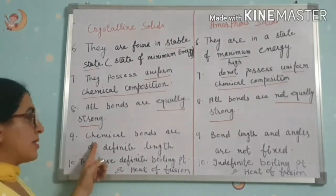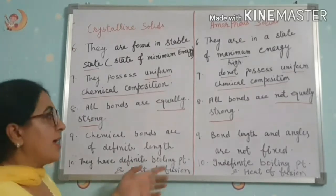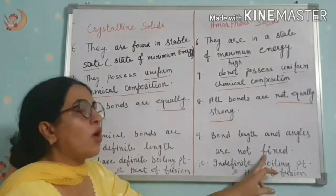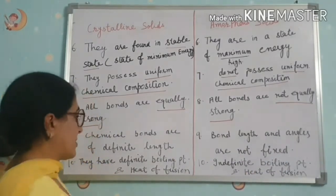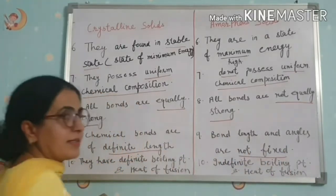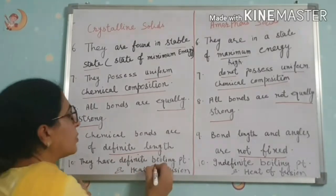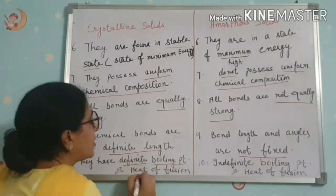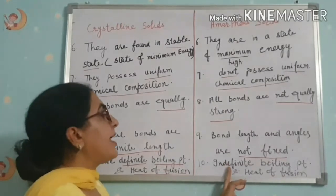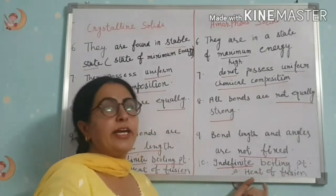The ninth point: in crystalline solids, chemical bonds are of definite length, while in amorphous solids the bond length and angles are not fixed. The tenth point: crystalline solids have a definite boiling point and heat of fusion. We also discussed the sharp melting point earlier. Amorphous solids have an indefinite boiling point and heat of fusion.